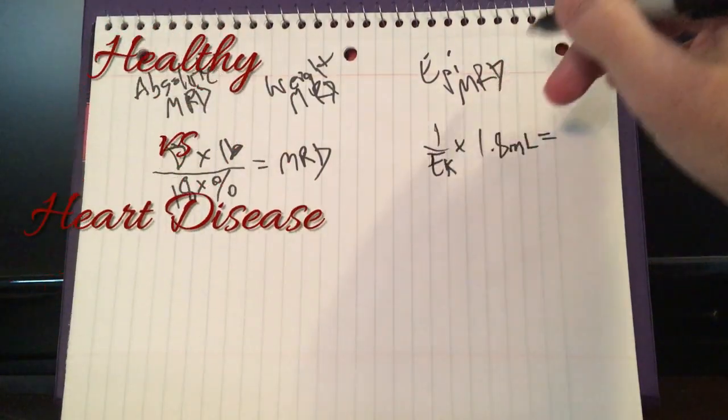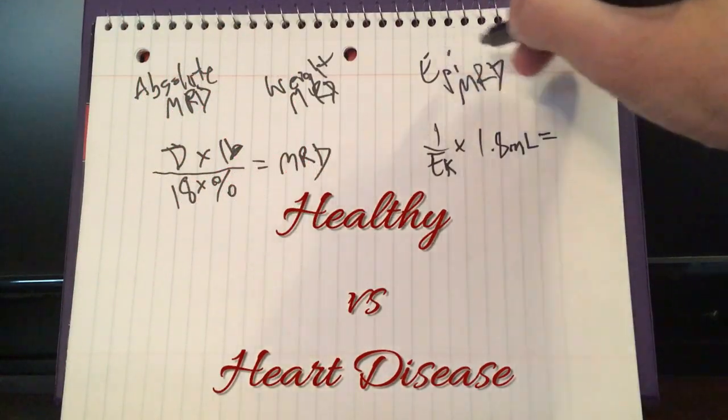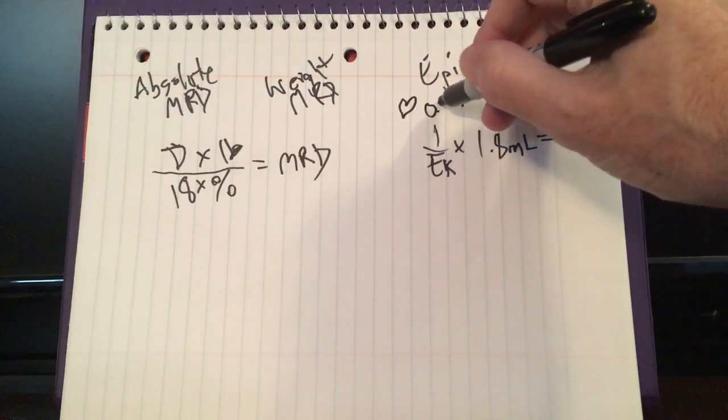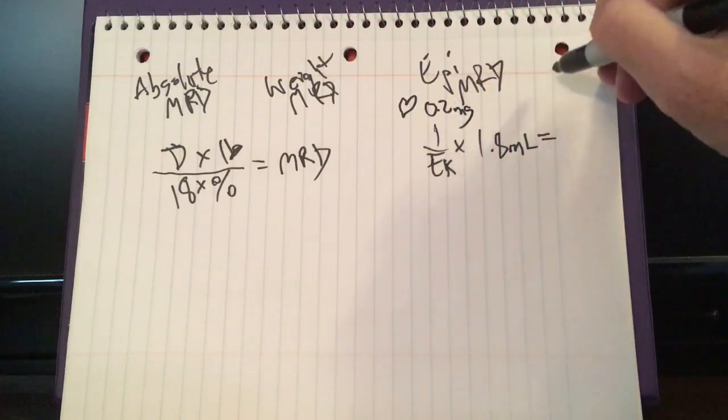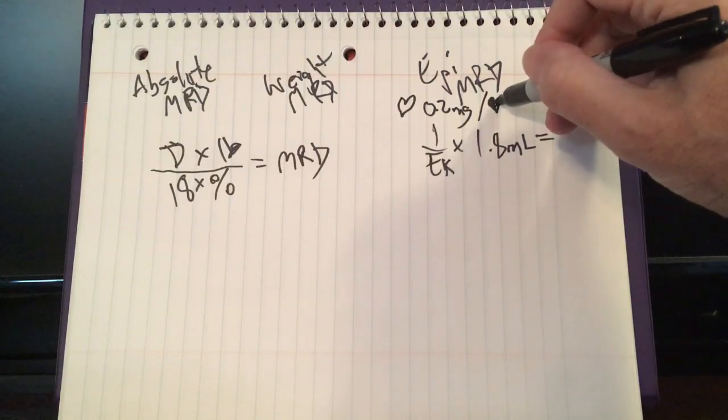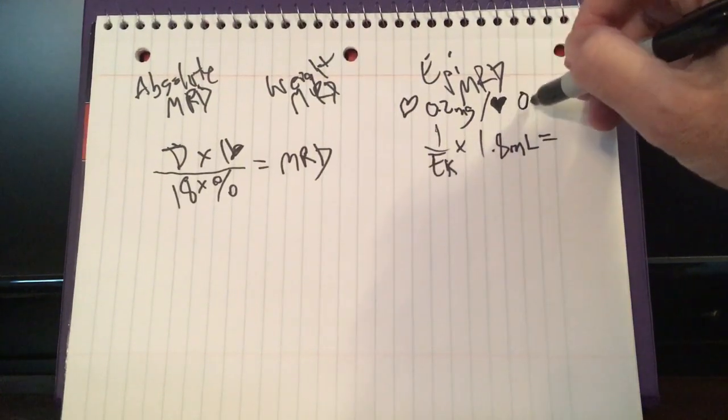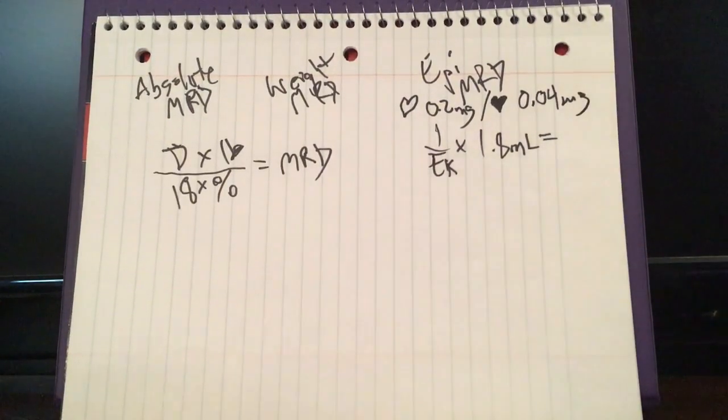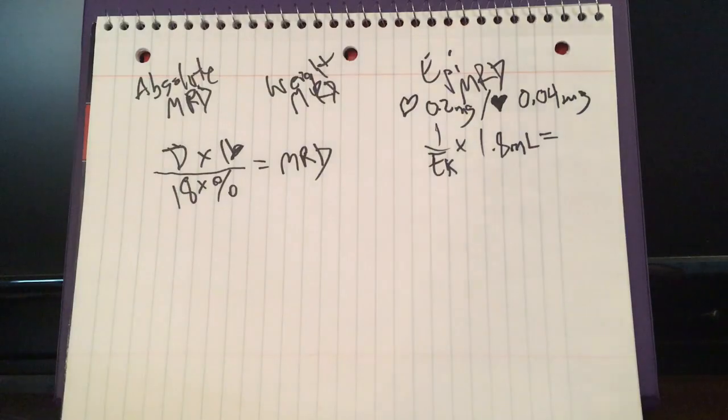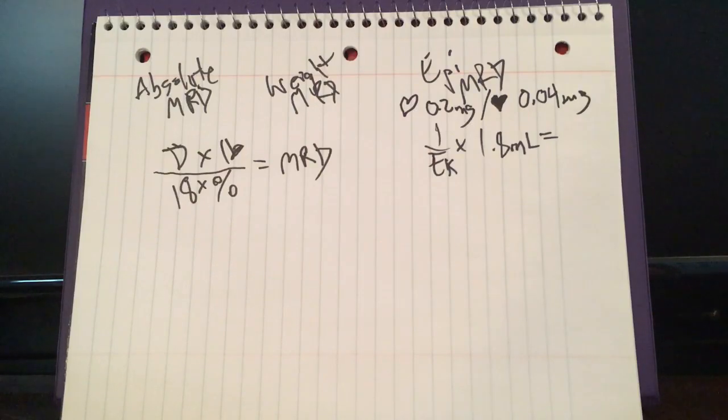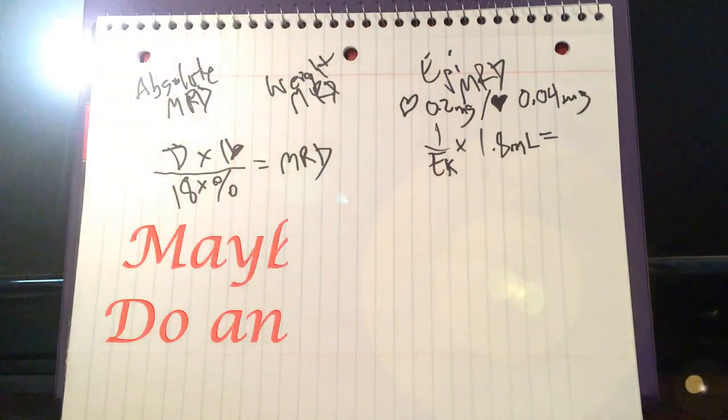So the numbers aren't that hard to memorize, there's only two of them. For healthy patients I'll put a little heart there, it's going to be 0.2 milligrams. And for unhealthy patients I'll put a little black heart, it's going to be 0.04 milligrams. And that's it - if you can memorize this, plug in the numbers, you can figure out pretty much any problem they throw at you.